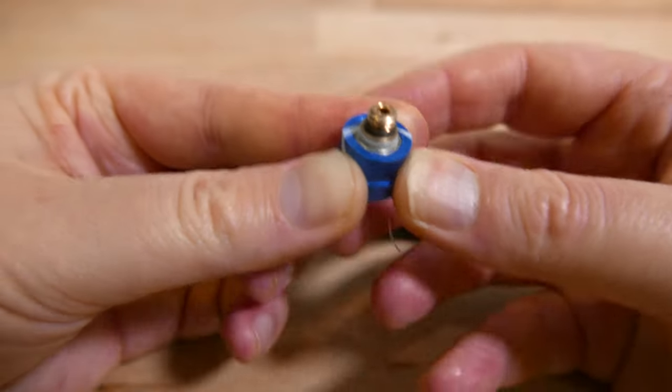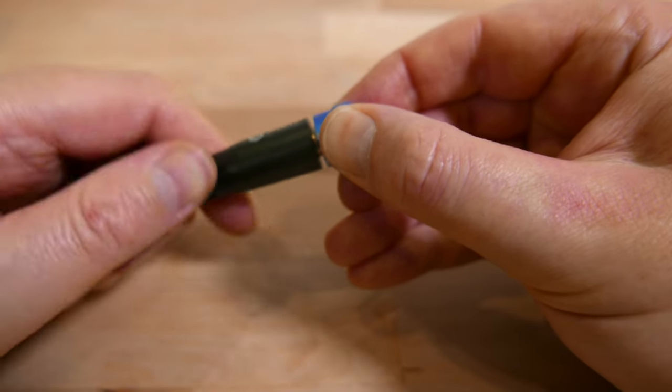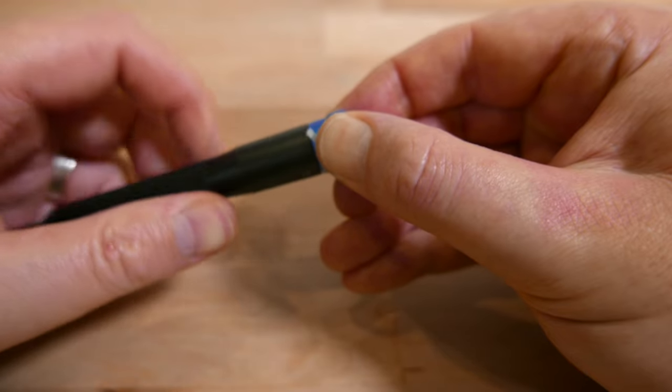Once it's been wrapped around, hold the two ends of the floss tightly with the thumb of your right hand. Take the screwdriver in your left hand and start turning it anti-clockwise.